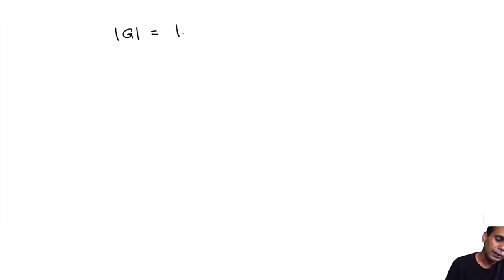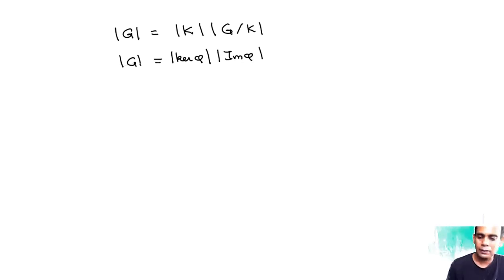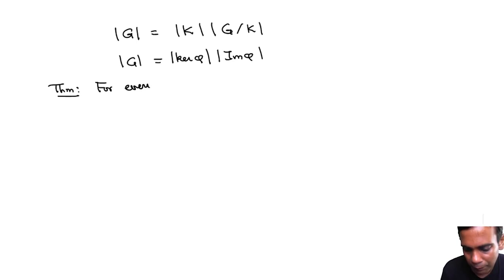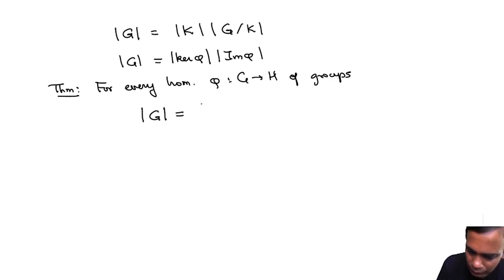What we know is that the cardinality of G equals the cardinality of K times the cardinality of G mod K. Since the cosets of K correspond to points in the image of φ, this gives us the following theorem: for every group homomorphism φ from G to H, the cardinality of G equals the cardinality of the kernel of φ times the cardinality of the image of φ.